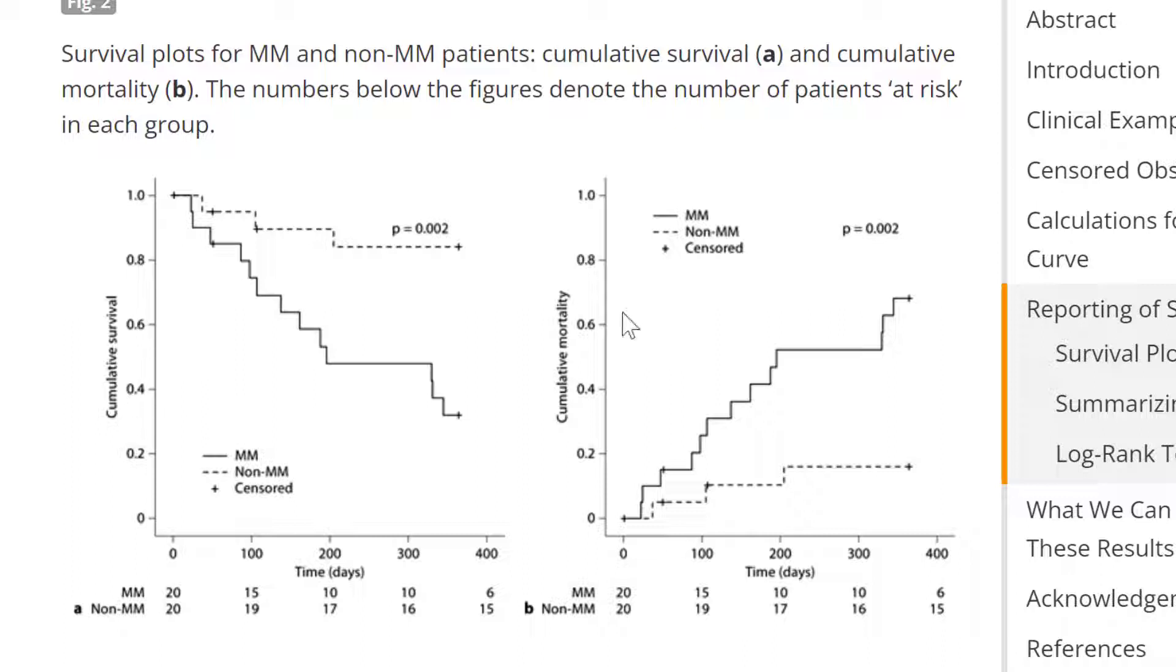On the right side you have cumulative mortality probability. So one minus probability of survival is also shown. In case of this one is MM and the lower one is non-MM. And cross points are censored points.